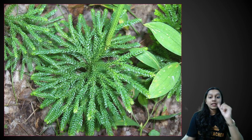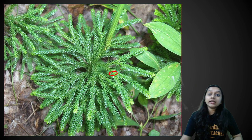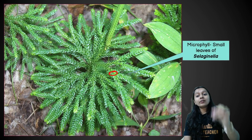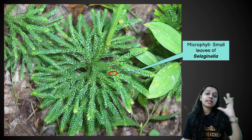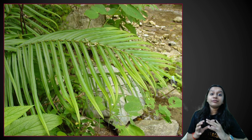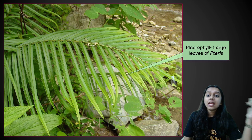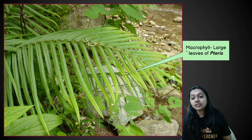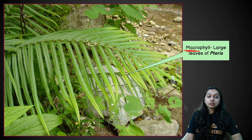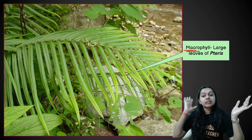Looking at the leaves more closely: in Selaginella, the leaves are very small — these are called microphylls, meaning small-sized leaves. On the other hand, in ferns (Pteridophyta), you will see large-sized leaves, and these are known as macrophylls. So small leaves in Selaginella = microphylls; big leaves in ferns = macrophylls.